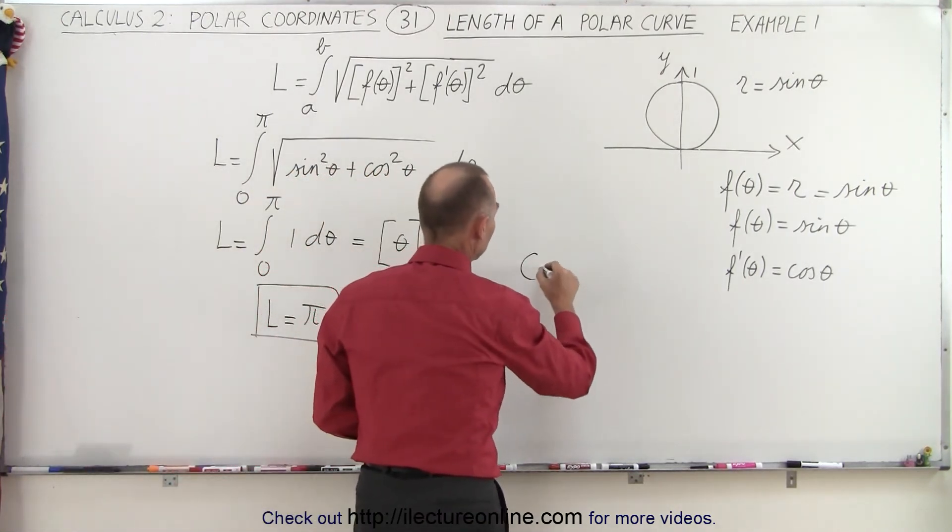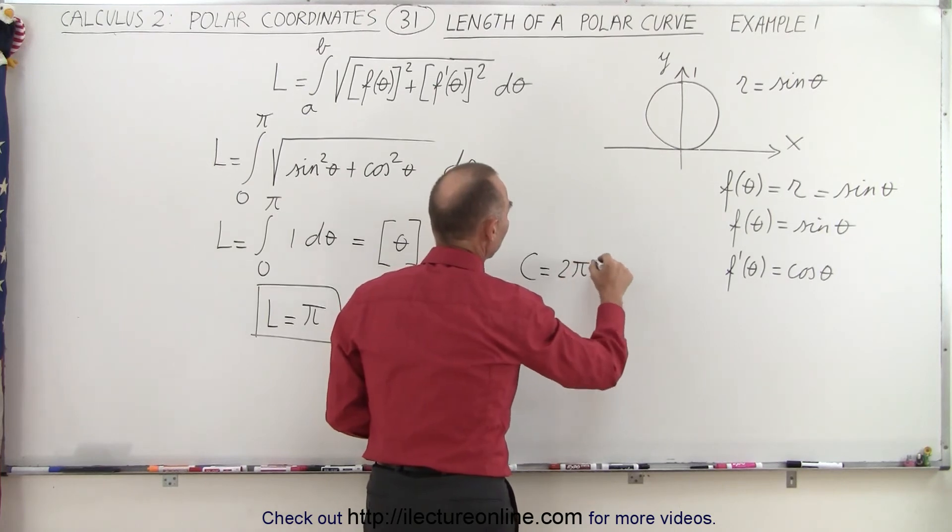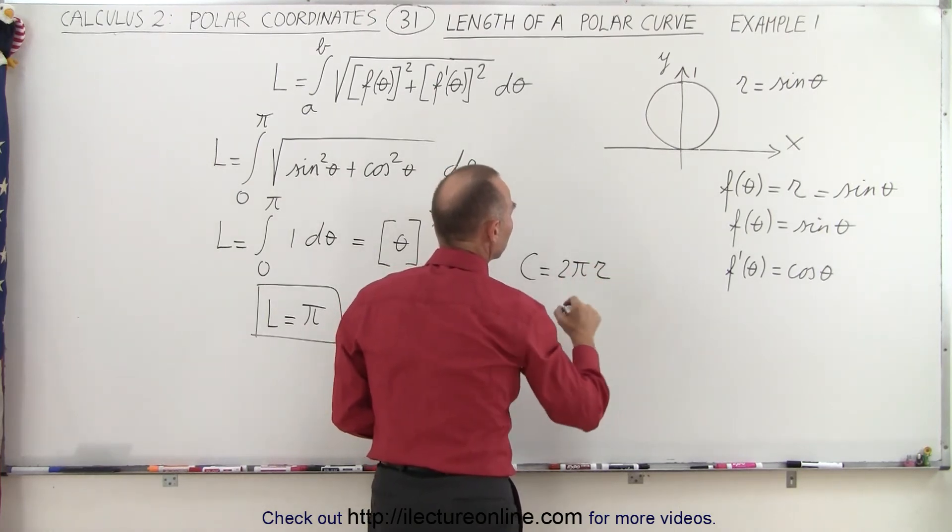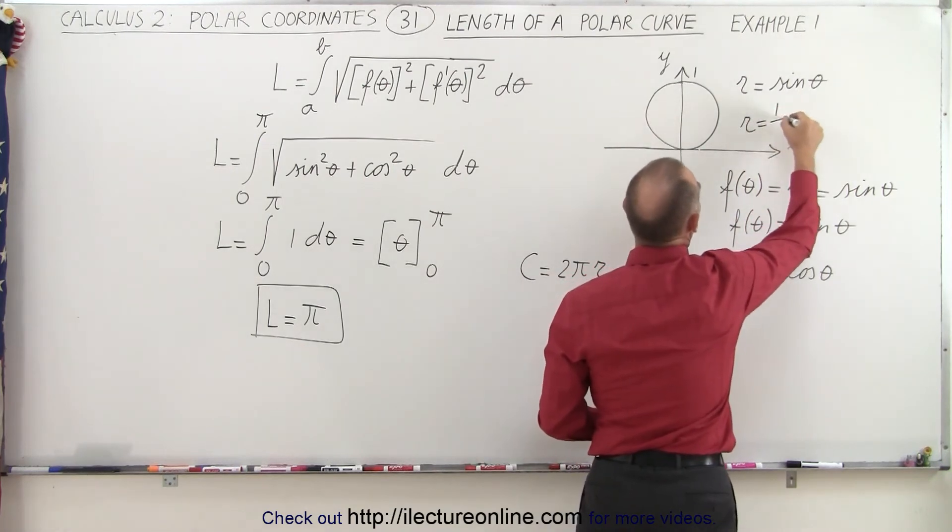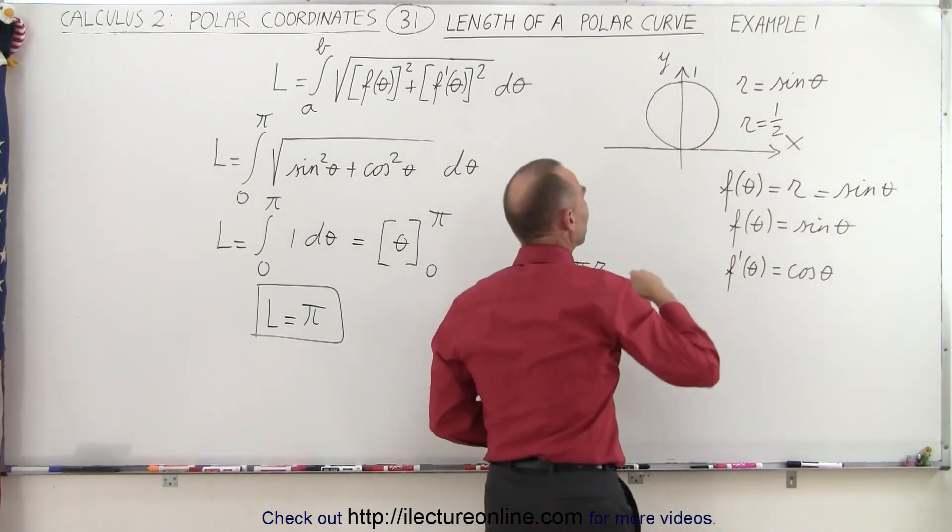We know the circumference of a circle is equal to two pi times the radius r. But in this case, we know that the radius is equal to one half for that particular circle.